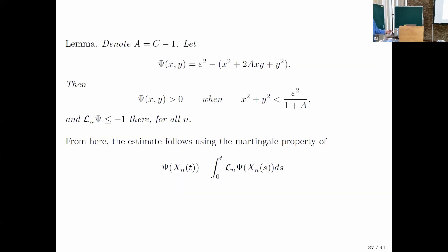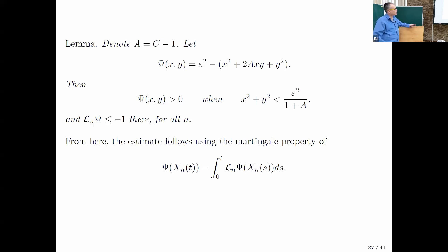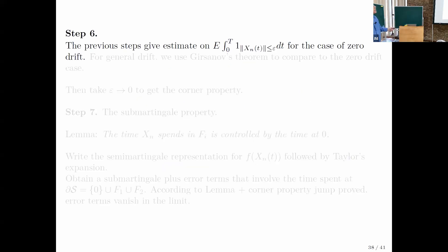If that's true for Brownian motion, it's also true for RBM in the quarter plane assuming the directions of reflection are normal — you can translate the event by taking absolute values for each coordinate. But we have oblique reflection. The question is whether you can modify this test function to have weaker properties that are sufficient. You can add 2axy — where a is an arbitrary number giving a degree of freedom — and instead of equality to zero for the Laplacian, it's enough to have an inequality. And instead of positivity all the way to the boundary, it's enough to have positivity in some neighborhood of the origin.